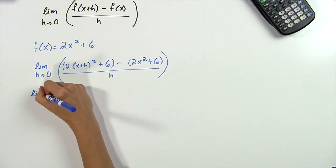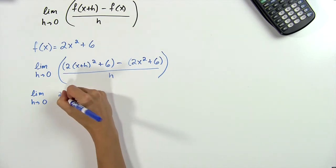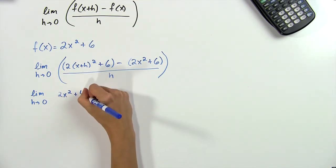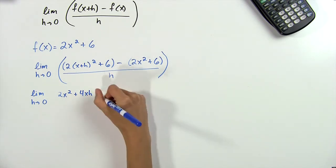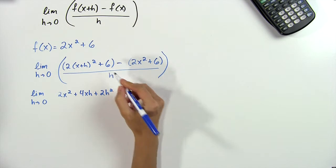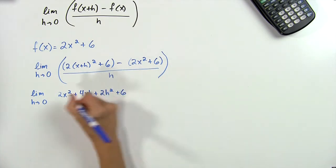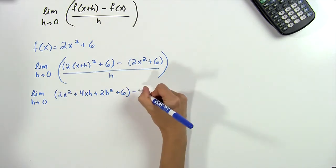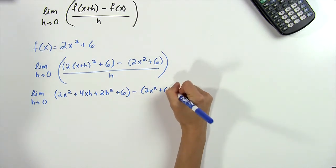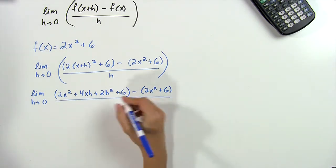So we have the limit as h tends to 0 of 2x squared plus 4xh plus 2h squared, and then we have our remaining plus 6 minus 2x squared plus 6, all divided by h.